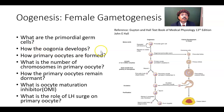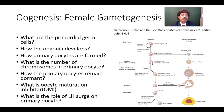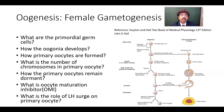The oogonium will be replicated to form the primary oocyte. Here we have 46 chromosomes and 2n DNA; after replication we have 46 chromosomes and 4n DNA. At birth we have no oogonium. At birth we have one to two million primary oocytes. This replication happens around the fifth month of intrauterine life.